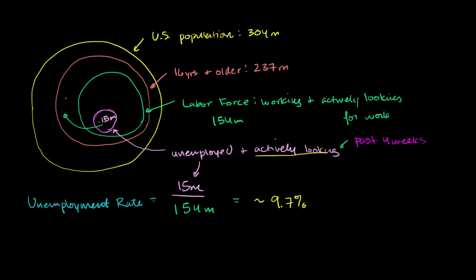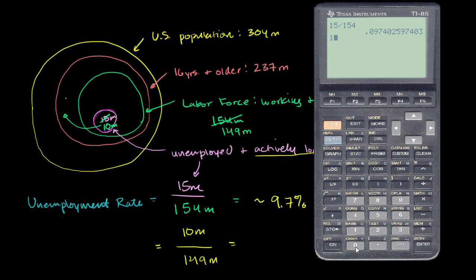Now let's say 5 million of these people get so discouraged they stop looking for work in the last four weeks. We take those 5 million out of the unemployed bucket and move them outside the labor force entirely. The official unemployed number is now 10 million, and the labor force shrinks to 149 million. So the unemployment rate becomes 10 divided by 149, which gives us 6.7%.